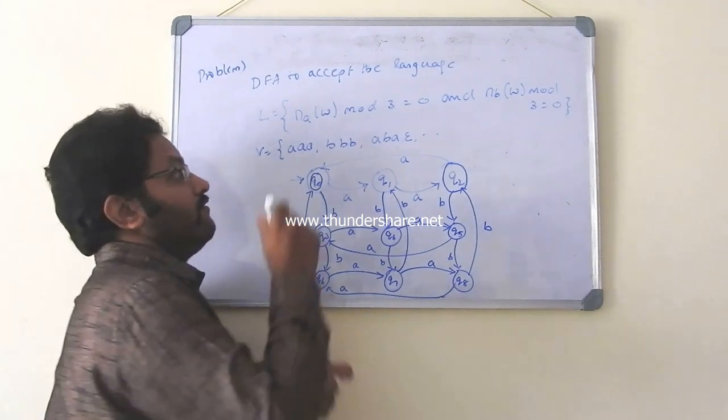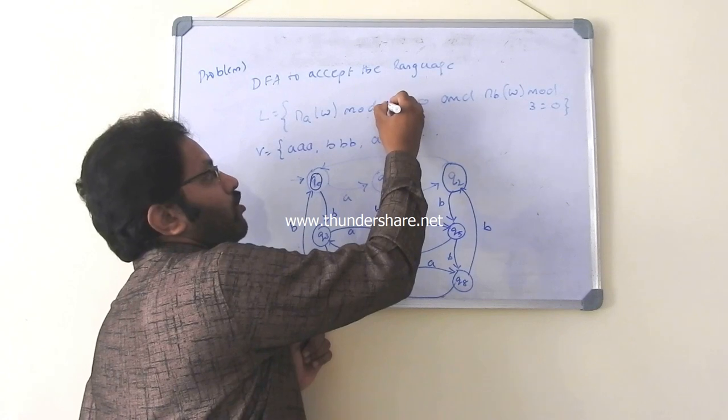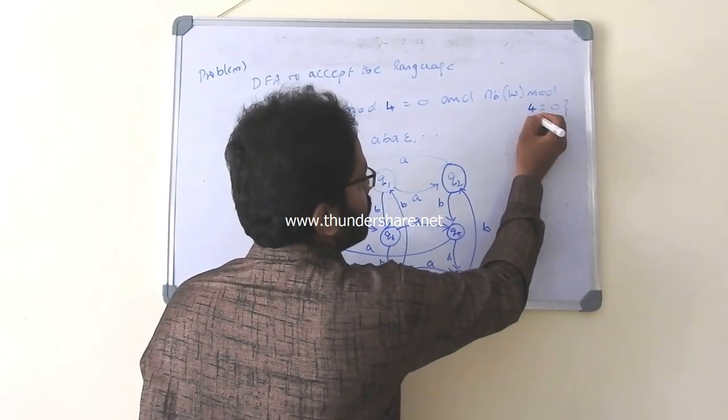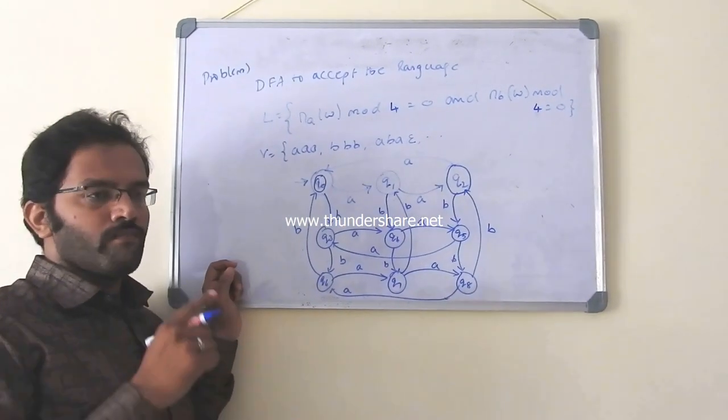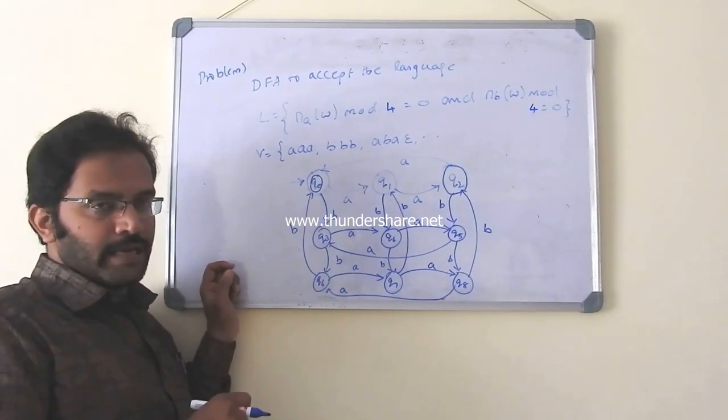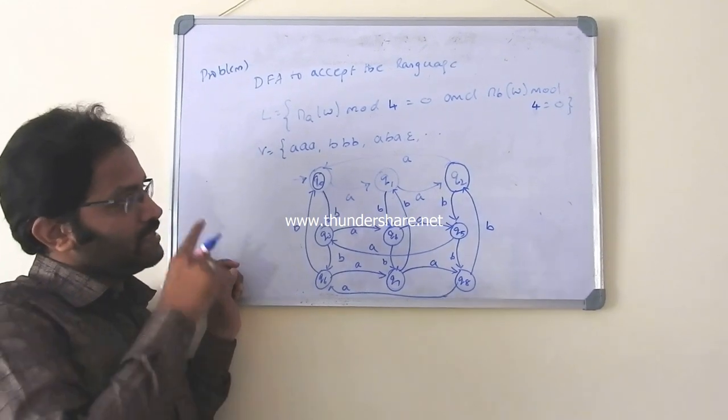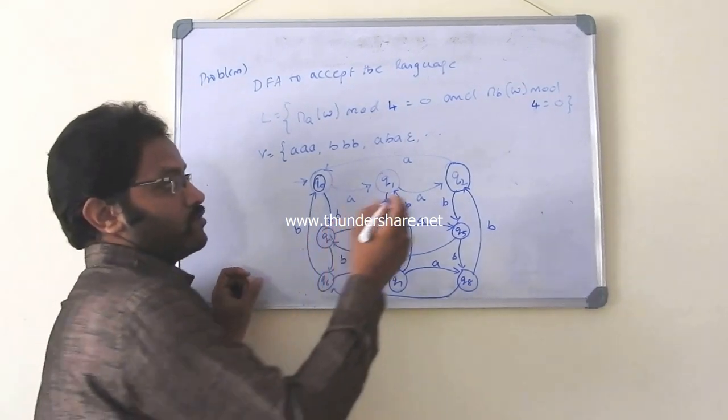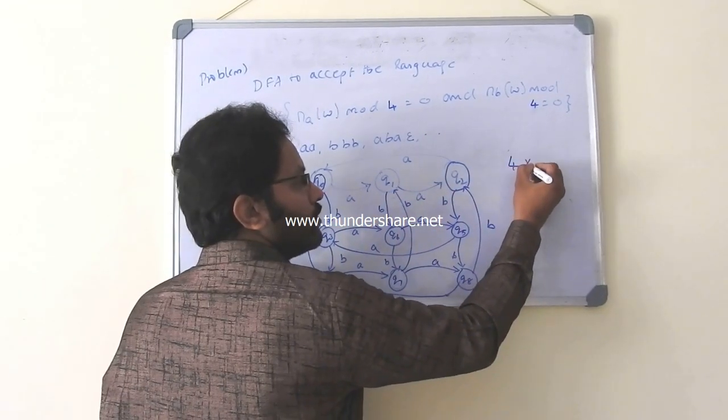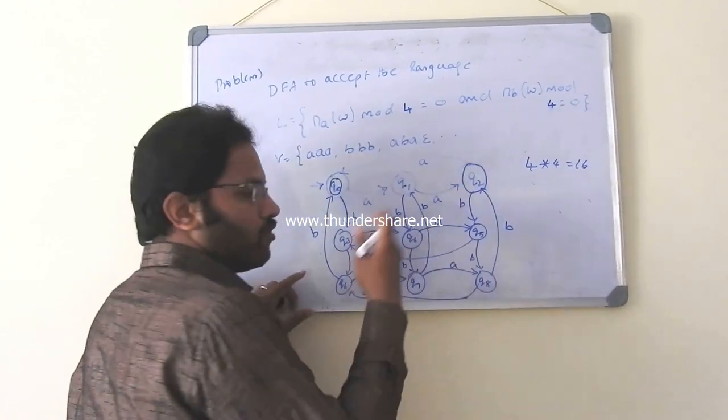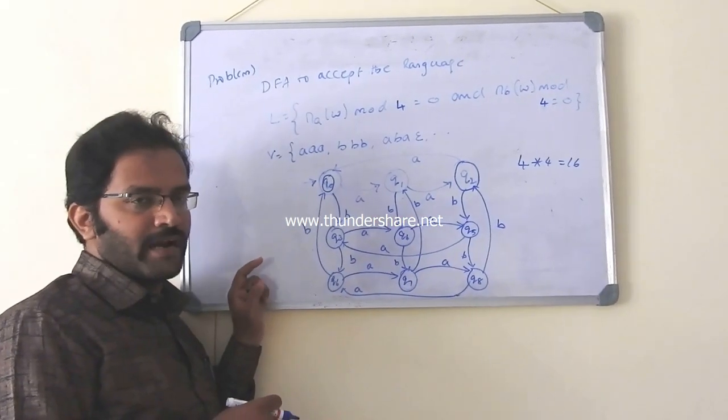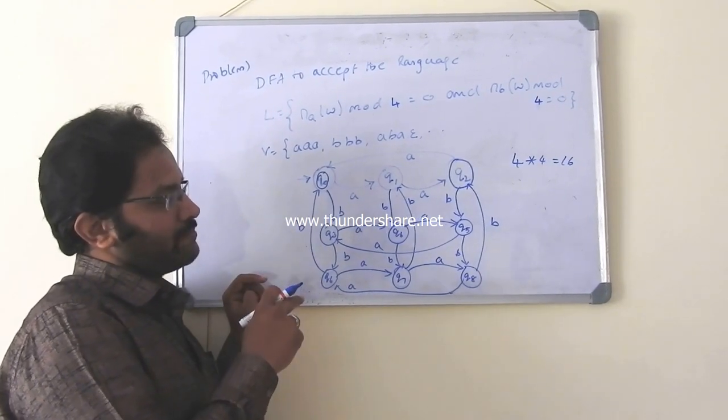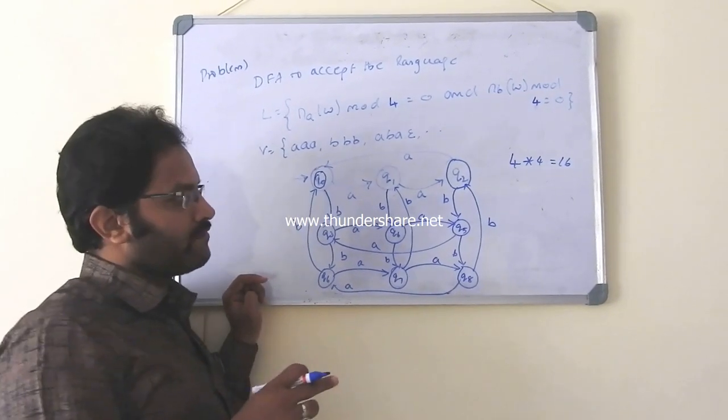Now, if you say number of A's in W mod 4 equals 0 and number of B's in W mod 4 equals 0, if you write like this, now the structure would remain same. Similarly, what would change is the number of states. Since you say 4 and 4, number of states could be 4 into 4 is 16. So you have one more row and one more column, 4 cross 4 matrix we write. Then you have a transition accordingly. Since you say again epsilon is an accepting string, so you say Q naught is final state.